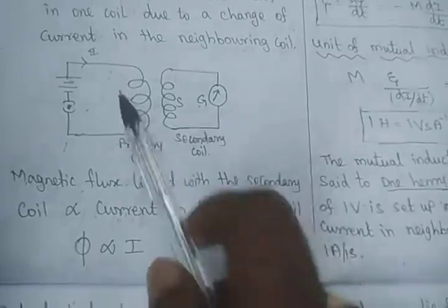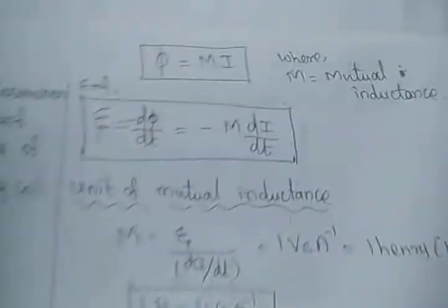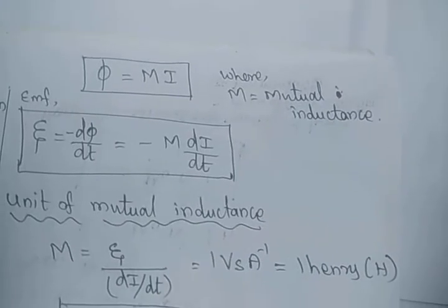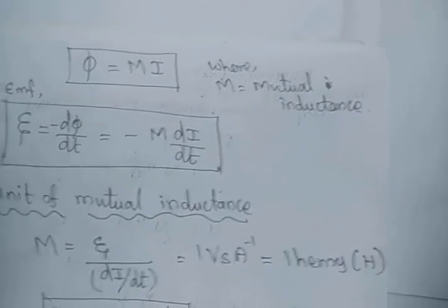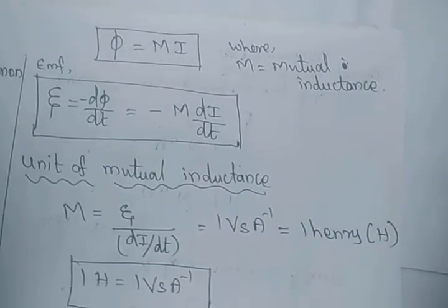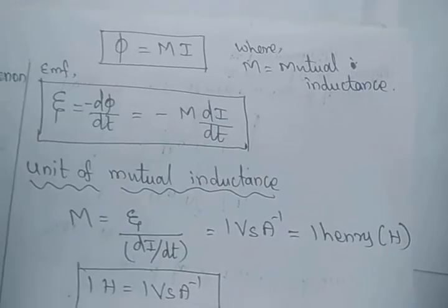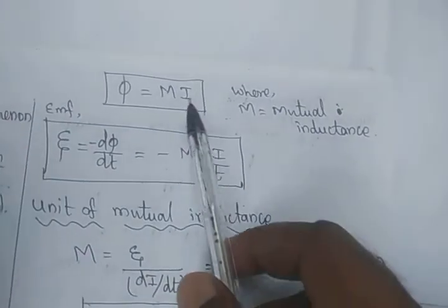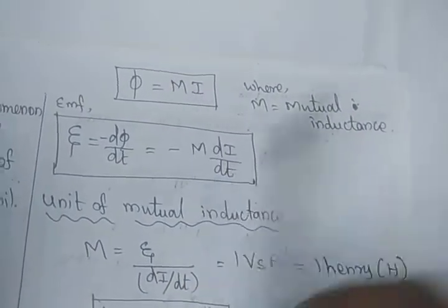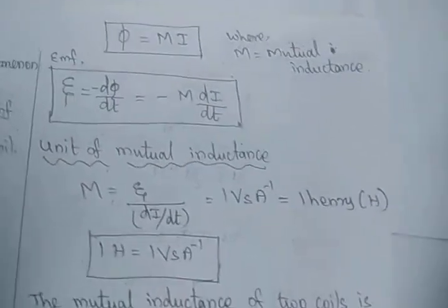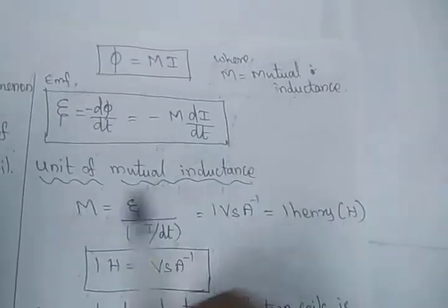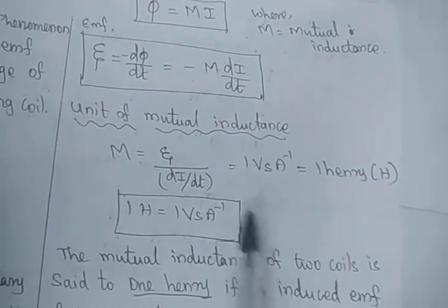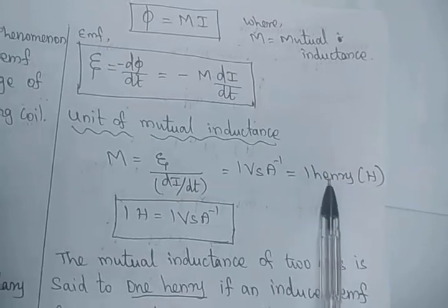So flux φ is directly proportional to current I. We put the constant M, where M denotes mutual inductance and L denotes self inductance. So EMF equals minus dφ/dt, and substituting, EMF equals minus M·dI/dt, because dφ/dt becomes dI/dt when we differentiate. The unit of mutual inductance M is determined as: 1 volt·second per ampere, which is 1 Henry.